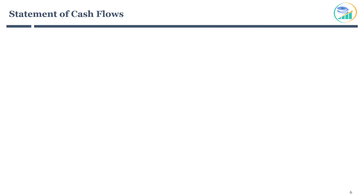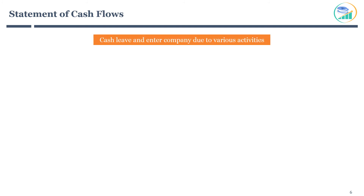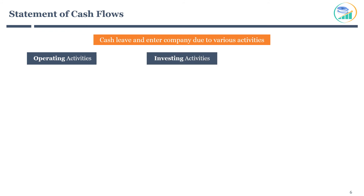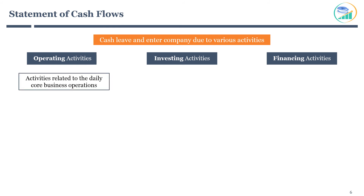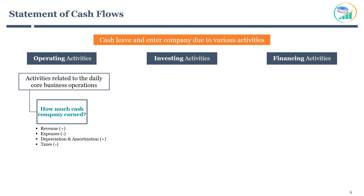Last but not least, let's get introduced to the cash flows statement. Cash leaves and enters the company due to various activities, broadly classified as: operating activities, investing activities, and financing activities. Operating activities refer to the core business operations — how much cash the company earned from the sale of products or providing services. It includes cash entering or leaving due to revenue from products or services, expenses, taxes, depreciation, amortization, and so on.